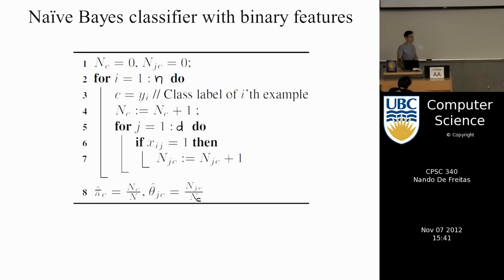The algorithm, dead simple. Right? Because all we have to do is counts. So we just loop and we count the number of times you estimate basically pi_c and theta_{jc}, which are just counts. So I'll let you at home parse the algorithm. In fact, I'm going to ask you to implement this.